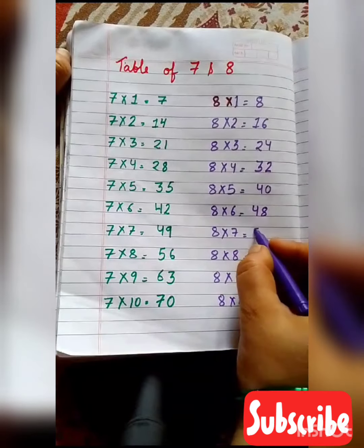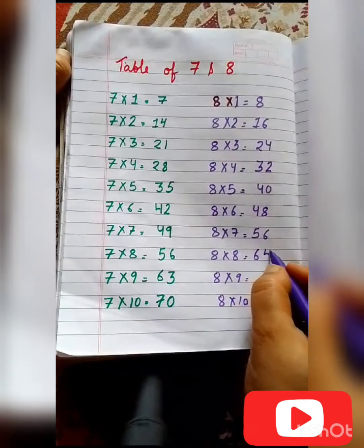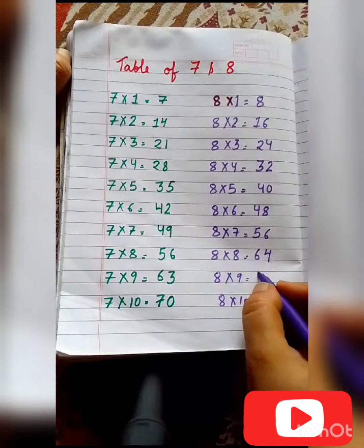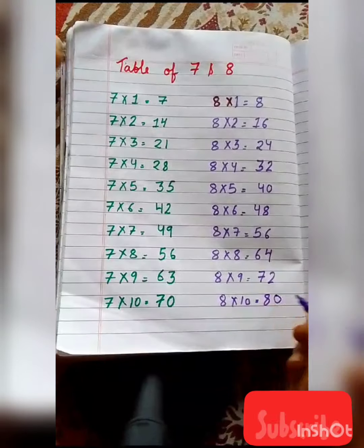8 sevens are 56, 8 eights are 64, 8 nines are 72, 8 tens are 80.